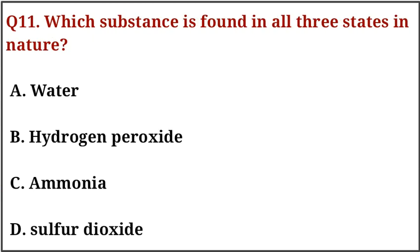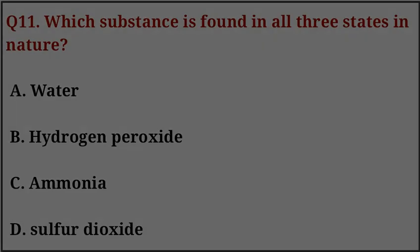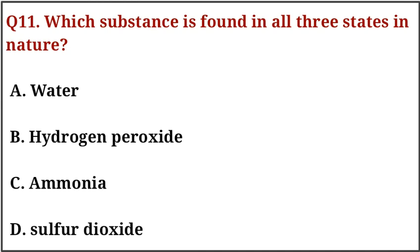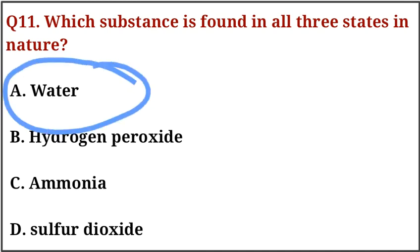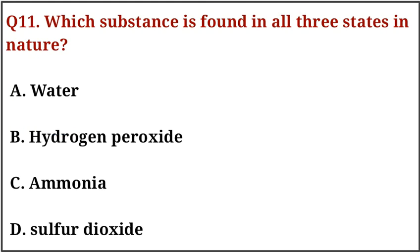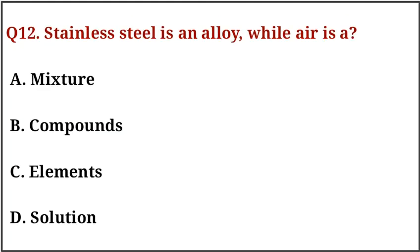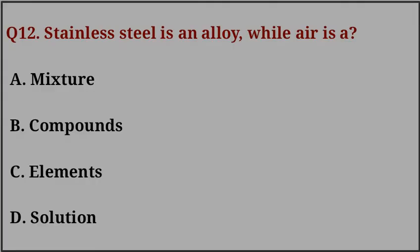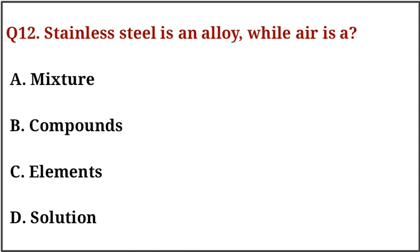Question number eleven: which substance is found in all three states in nature? The correct answer is option number A, that is water. Question number twelve: stainless steel is an alloy, while air is? The correct answer is option number A, that is mixture.